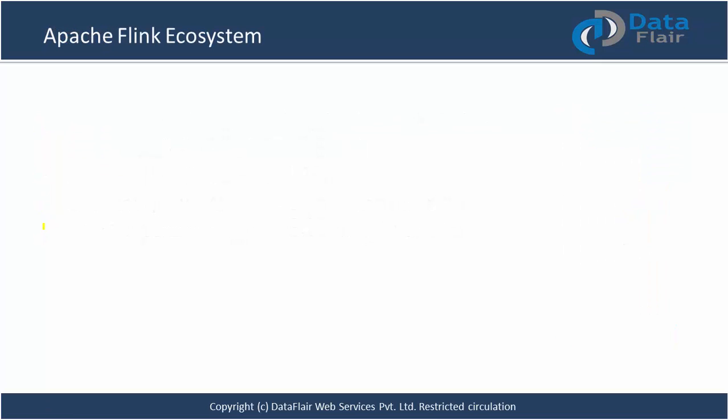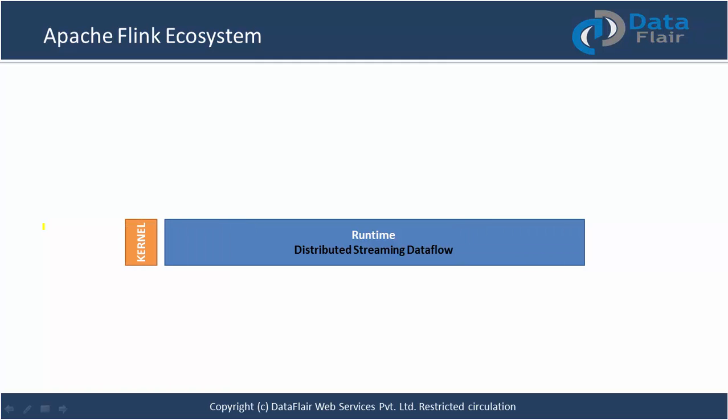At the heart, at the core, at the kernel of the Apache Flink ecosystem is distributed streaming data flow — the runtime is a streaming engine. Everything you run on top of Flink is ultimately handled by the streaming data flow, and this is another reason behind the speed and efficiency of Apache Flink.